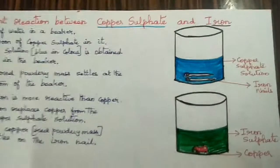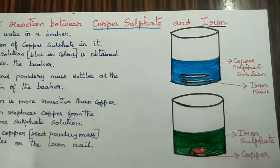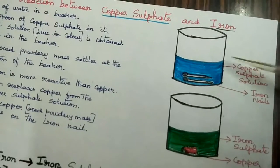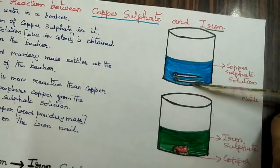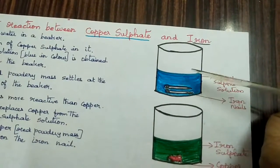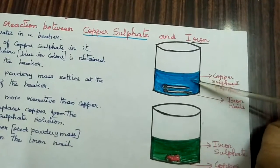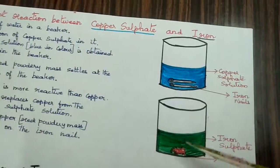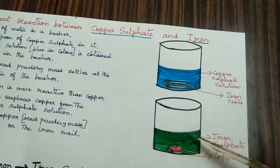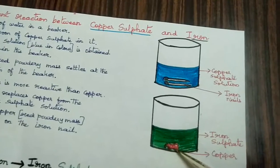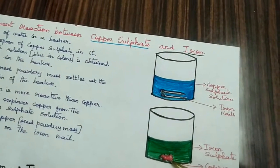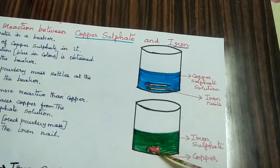Do you see? In the first beaker, you can see the blue color copper sulfate and iron nails. Now iron has replaced the copper from the copper sulfate solution and the solution has turned green in color, which is iron sulfate, and the red color powdery mass you can see on the nails, which is nothing but copper.